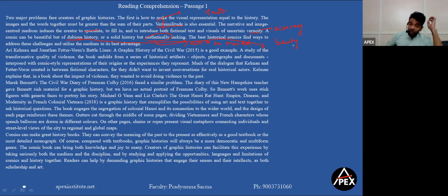And now we go for examples. Three particular examples about three different books are given in this passage that we can look at. Ali Kelman and John Thurv at Fetter Worm's Battle Lines: A Graphic History of the Civil War 2015 is a good example. A study of transformative quality of violence, the book unfolds from a series of historical artifacts, objects, photographs, and documents interposed - what is interposed? Intervening amongst parties - so maybe each of these are somehow being a part of the other. The objects are being a part of the photograph, photographs are being part of the documents and so on, all with comic style representation of their origin or the experience that they represent.